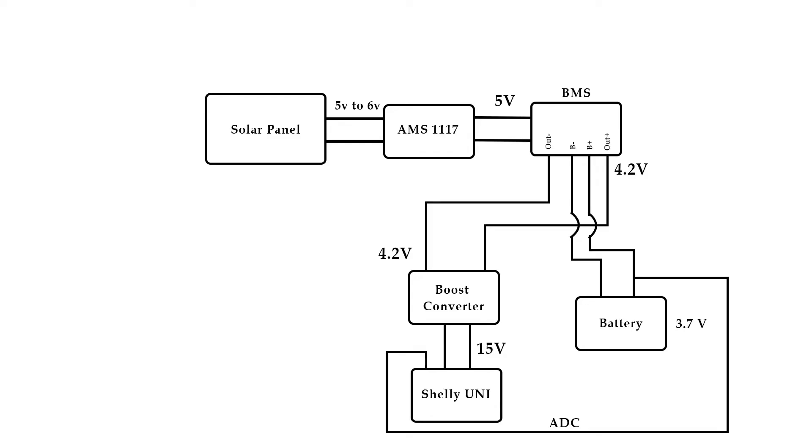This is how I wired things together. Let me explain how this works. When sunlight falls on the solar panel, it generates 5-6V power.